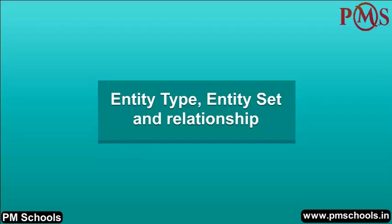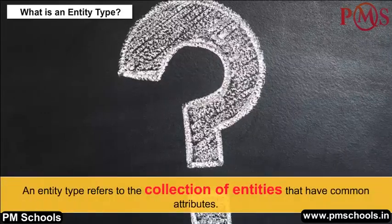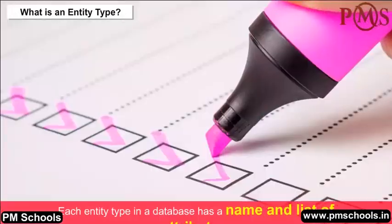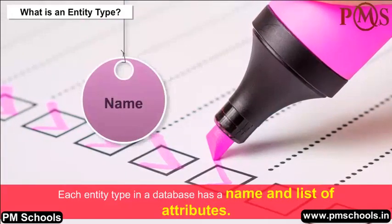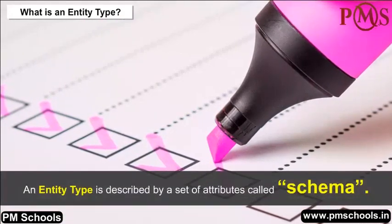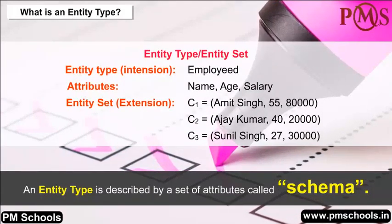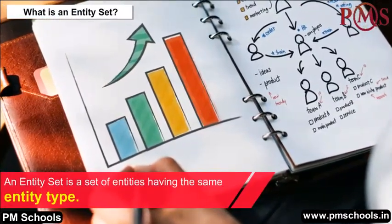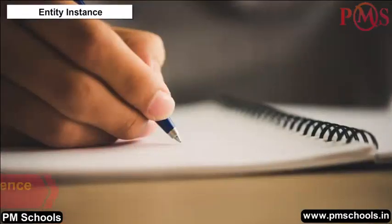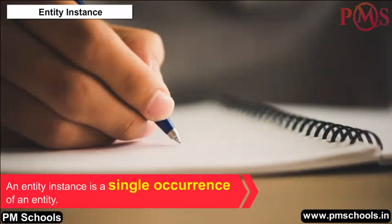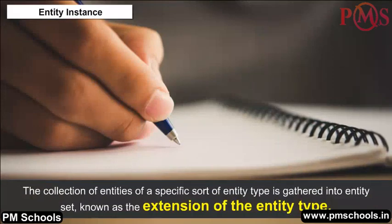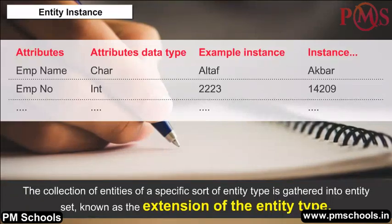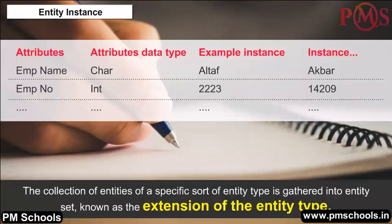What is an Entity Type? An entity type refers to the collection of entities that have common attributes. Each entity type in a database has a name and a list of attributes, and is described by a set of attributes called a schema. What is an Entity Set? An entity set is a set of entities having the same entity type. An entity instance is a single occurrence of an entity, and the collection of entities of a specific entity type gathered into an entity set is the extension of the entity type.